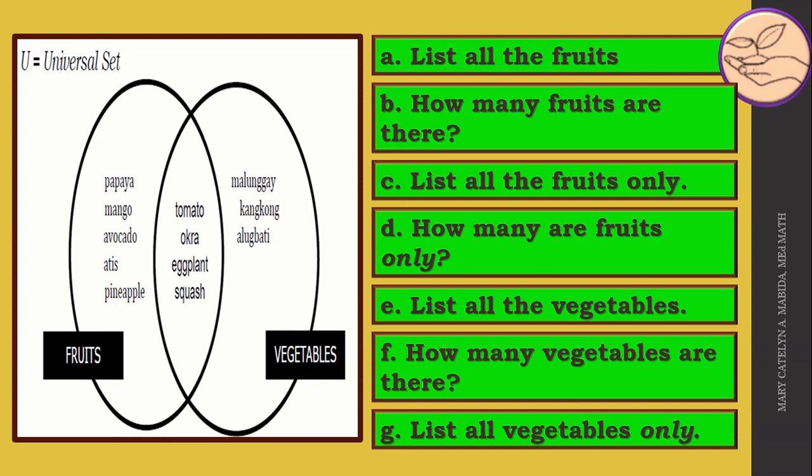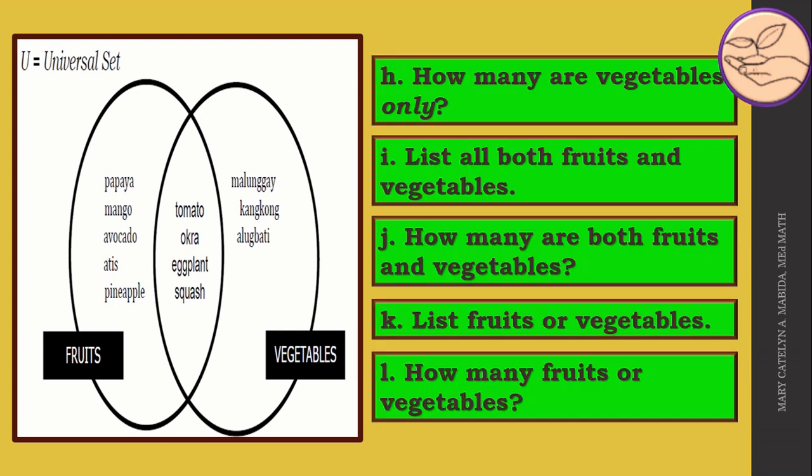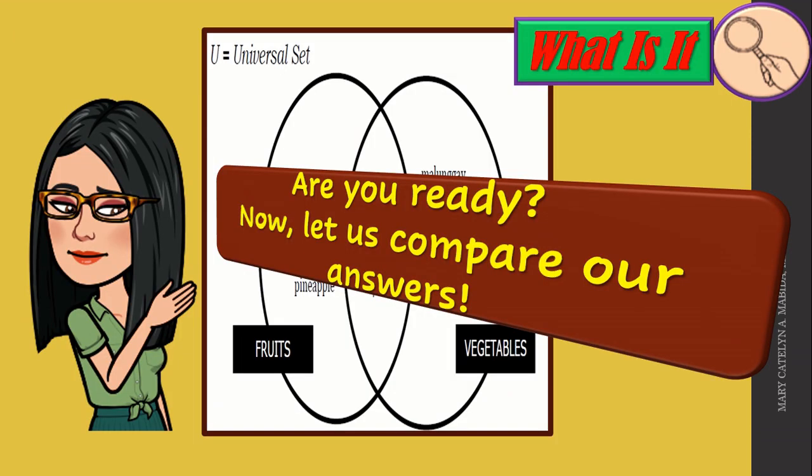Let's proceed. H. How many vegetables only? I. List all both fruits and vegetables. J. How many are both fruits and vegetables? K. List fruits or vegetables. And L. How many fruits or vegetables? Are you ready? Now let us compare our answers.